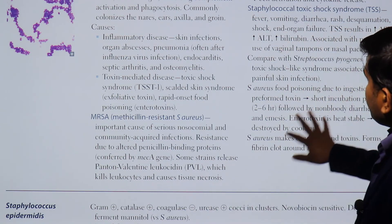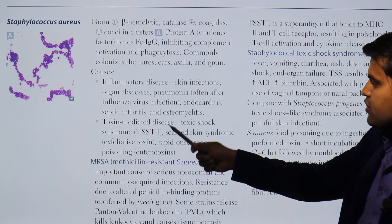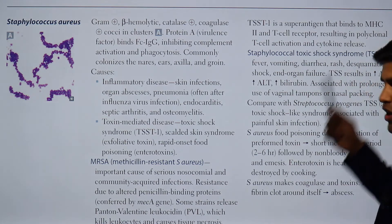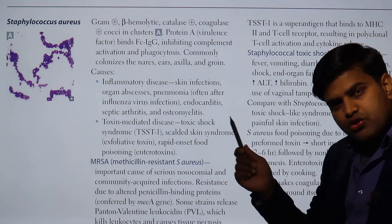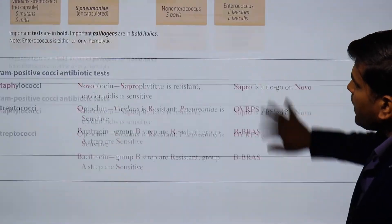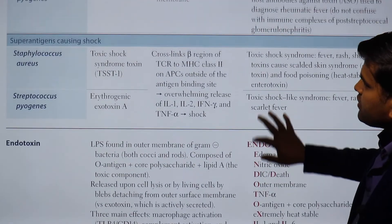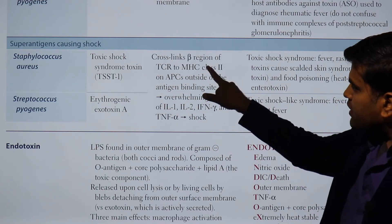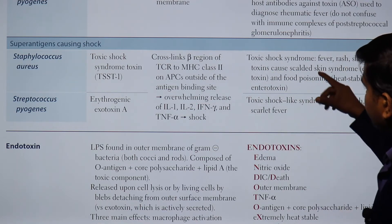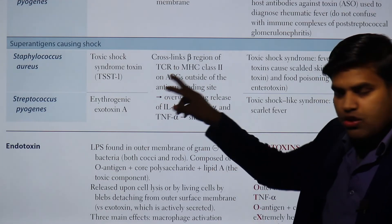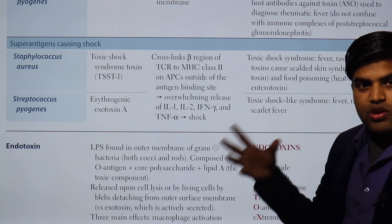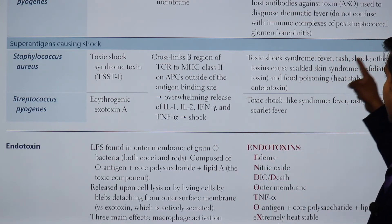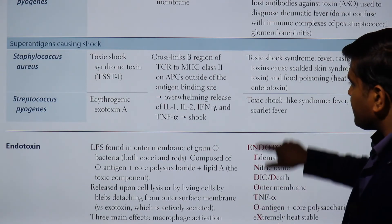The toxic shock syndrome toxin (TSST) is a super antigen that binds to MHC class II and the T cell receptor outside the normal antigen groove, resulting in polyclonal T cell activation and a massive cytokine storm. Normally about 1% of T cells are activated, but TSST causes more than 20% activation, releasing large amounts of cytokines that damage the body, resulting in fever, rash, and shock.